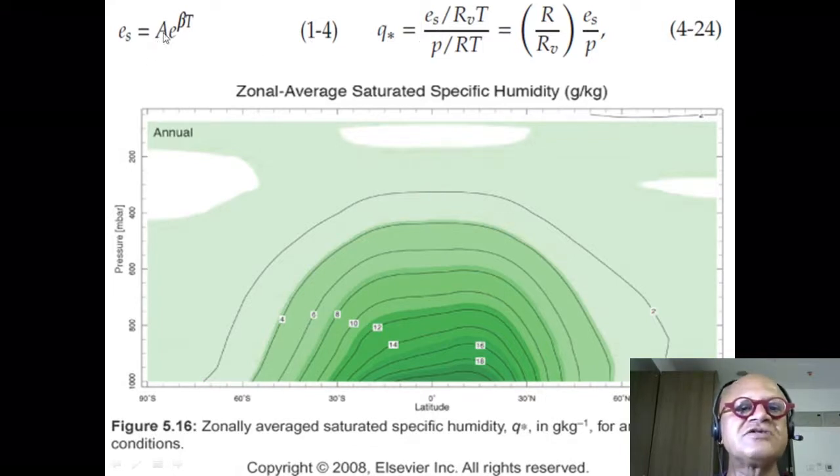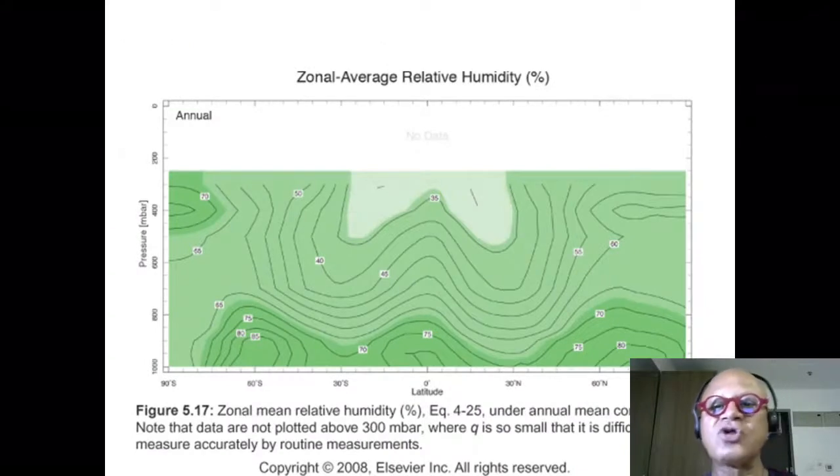And here E_S obviously is a constant A in pressure and it's times e to the beta T, where beta is a constant also. That's our Clausius-Clapeyron equation.